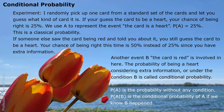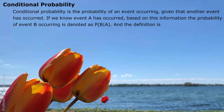The conditional probability of A given B is noted as P(A|B) — A followed by a vertical line followed by B. Conditional probability is the probability of an event occurring given that another event has occurred. If we know event A has occurred, based on this information, the probability of event B occurring is denoted as probability of B under condition A, P(B|A).